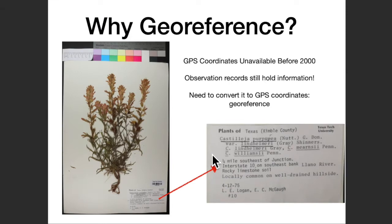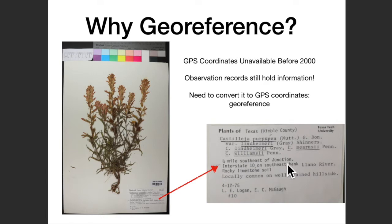Prior to 2000, natural history observations could only be made by describing where something was in words. For example, in this herbarium specimen, the collectors Logan and McGaw described this specimen as occurring one quarter mile southeast of Junction, Texas, along the southeast bank of the Llano River near where Interstate 10 crosses it.